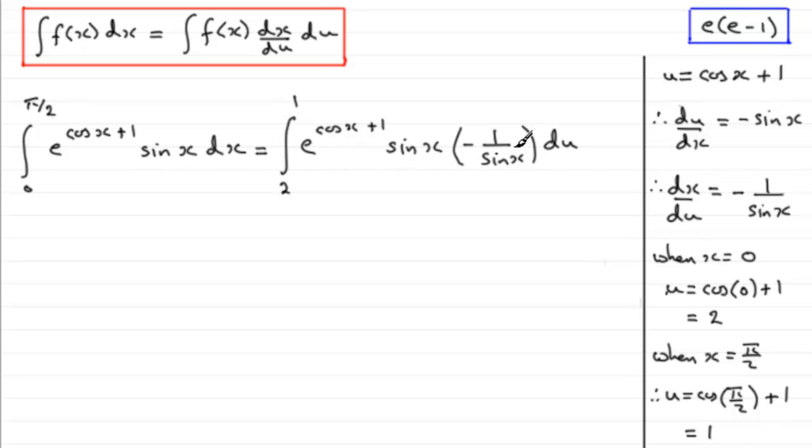We need to now just try and convert this all to u. We're lucky here in this example because this sine x cancels out with this sine x here, and we've got the cos x plus 1 is u. So we can convert this completely then to an integral with respect to u. We've got an integral going from 2 to 1, and then we've got e to the u times minus 1. You could put the minus out the front here, actually.